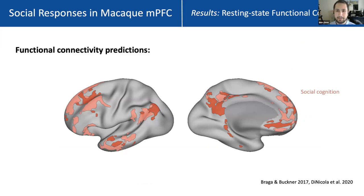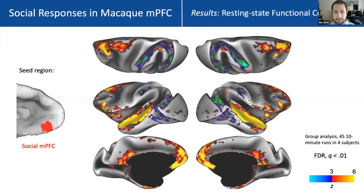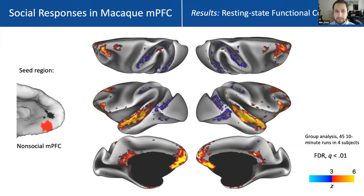Lastly, we looked at resting state functional connectivity. Based on human data, we expect these regions to be functionally connected to other parts of the default mode network, with different connectivity patterns for socially preferring versus non-preferring regions. For a ventral face-preferring seed in macaque mPFC, we see a clearly default-mode-network-like pattern of connectivity, including other regions in medial prefrontal cortex, posterior cingulate cortex, parahippocampal gyrus, dorsal STS, and an intriguingly TPJ-like region of lateral parietal cortex in Brodmann area 7a. When we look at the adjacent non-socially-preferring region, we again see a DMN-like pattern, but this pattern doesn't differ significantly from the socially preferring seed.